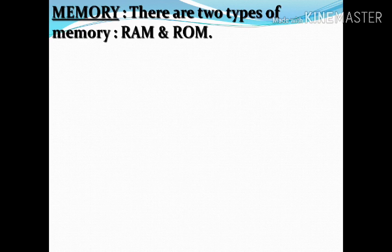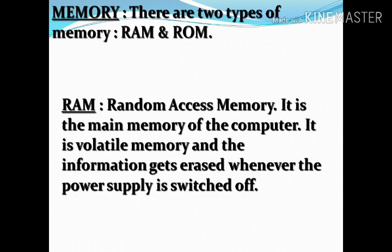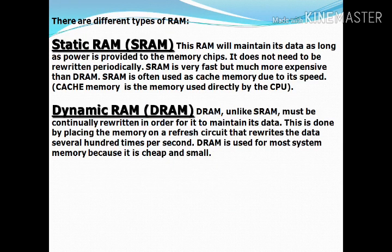Now the memory part: RAM and ROM — that's very basic. RAM stands for Random Access Memory — it can both read and write. It is the main memory of the computer. It is a volatile memory and the information gets erased whenever the power supply is off. There are two types of RAM: SRAM (Static RAM) and DRAM (Dynamic RAM).